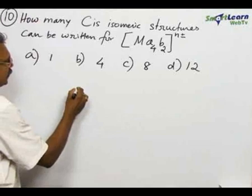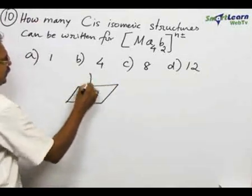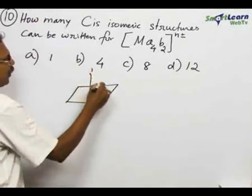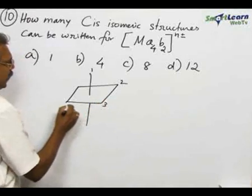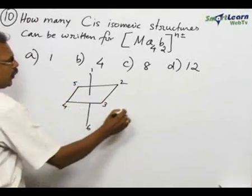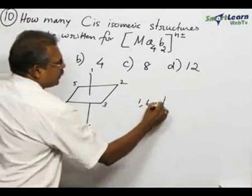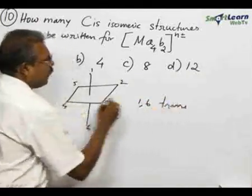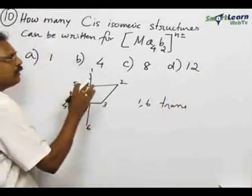And if you draw the structure and the number is like this, this would be number one, this 2, 3, 4, 5, 6. 1, 6 is taken as trans and all other positions are cis.